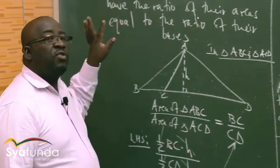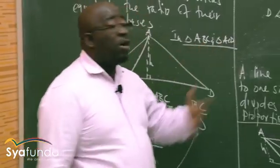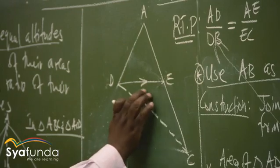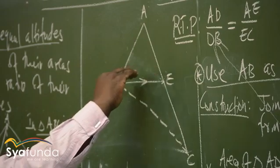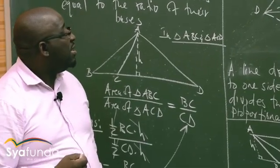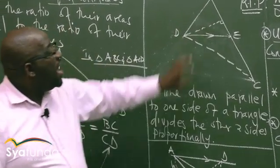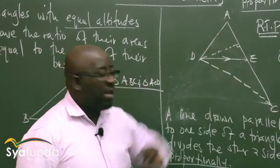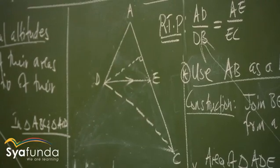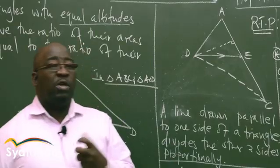Remember, if I want to use this theorem — which says triangles with equal altitudes have the ratio of their areas equal to the ratio of their bases — for me to use that theorem, both triangles must have the same altitude, the same perpendicular height. Do you see this triangle here? If AC is the base, then the perpendicular height will be this one. Both triangles now have the same altitude.